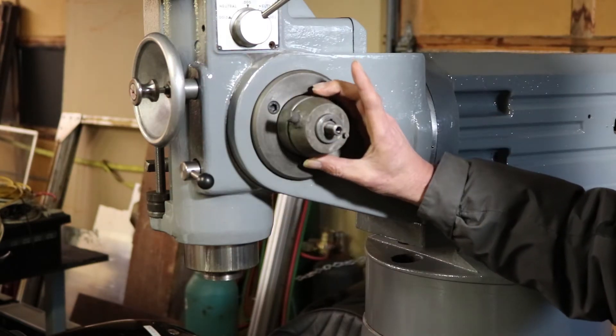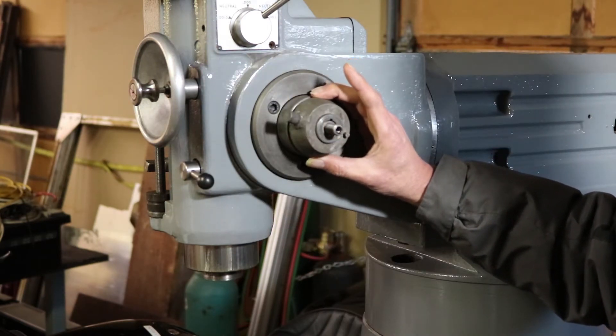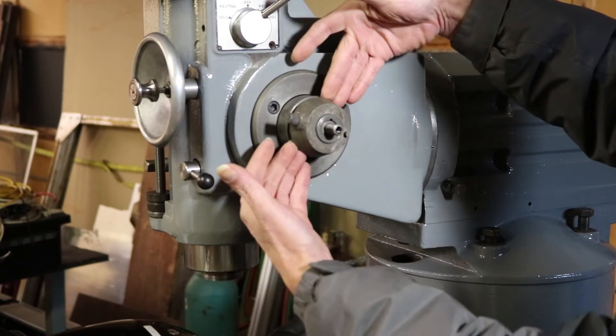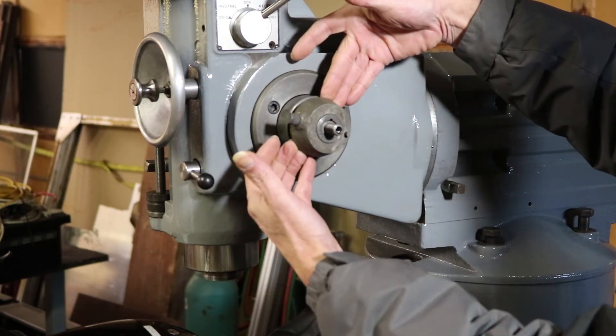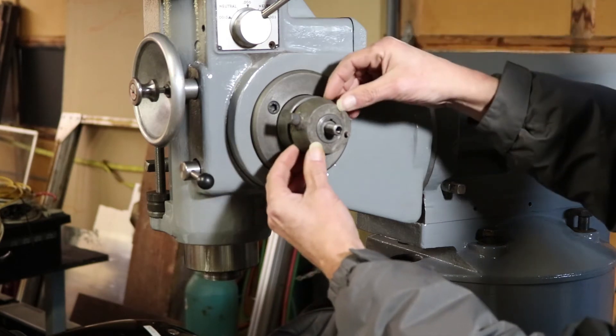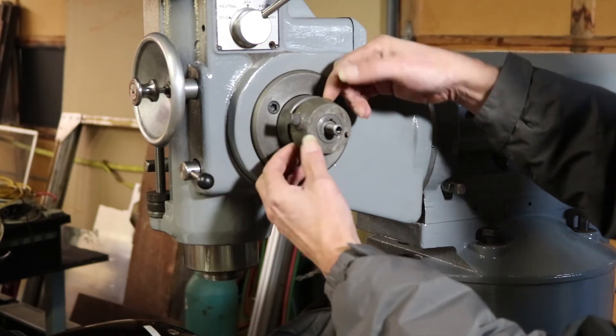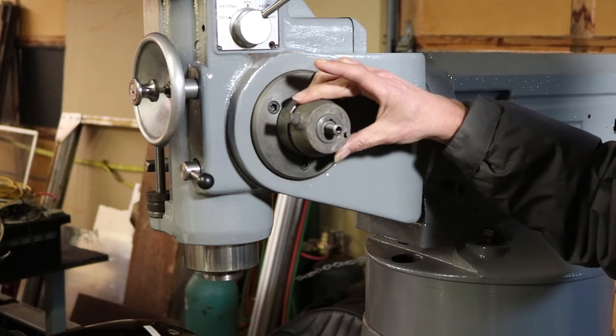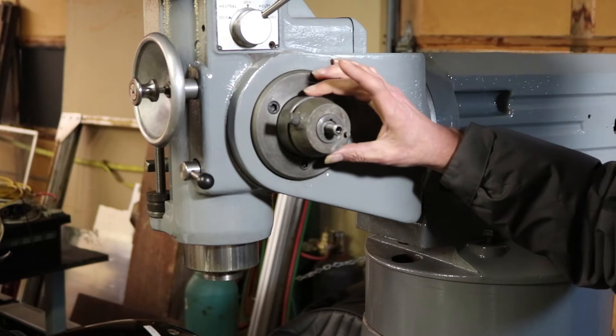I got this thing separated just a little bit with a bearing separator that basically pushes in from either side. I got enough space in there, but I could never get it off while it was on the machine.